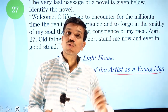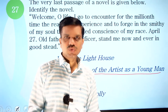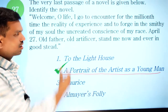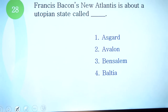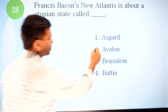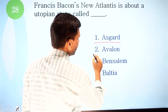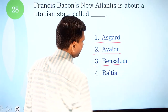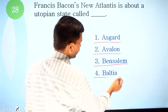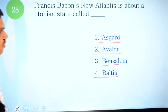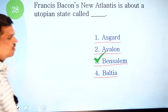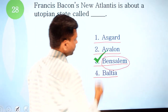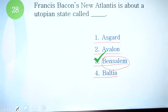You should know the beginning and ending of some popular texts by popular authors — this is very important, so read some original texts too. Question 28: Francis Bacon's New Atlantis is about a utopian state called what? Options are: one, Asgard; two, Aylon; three, Bensalem; four, Baltia. The correct option is Bensalem.